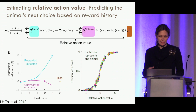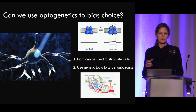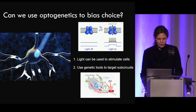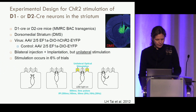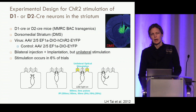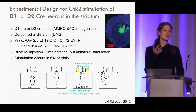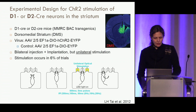Now we use optogenetics in a more precise way — 500-millisecond stimulations in the context of the task, rather than 20 seconds. We're in the dorsal medial striatum with D1 and D2 Cre mice, using viruses to deliver channelrhodopsin. We make bilateral injections but stimulate unilaterally, only in 6% of trials — since animals do over 1,000 trials per session, we get plenty of data without the animal updating based on strange choices. We stimulate when they're equidistant and making their choice.